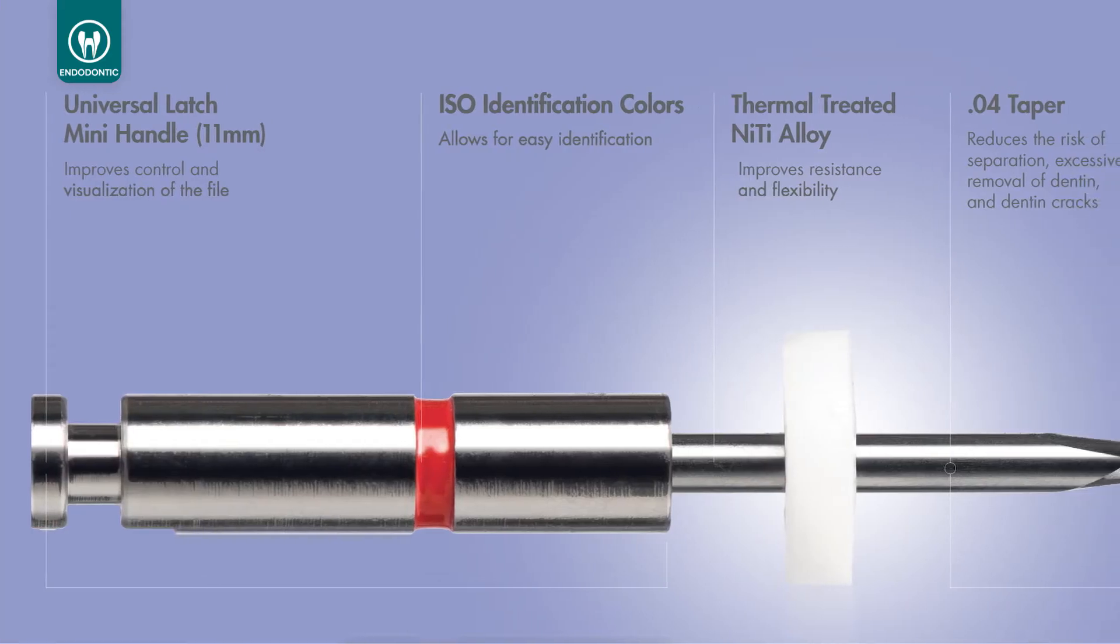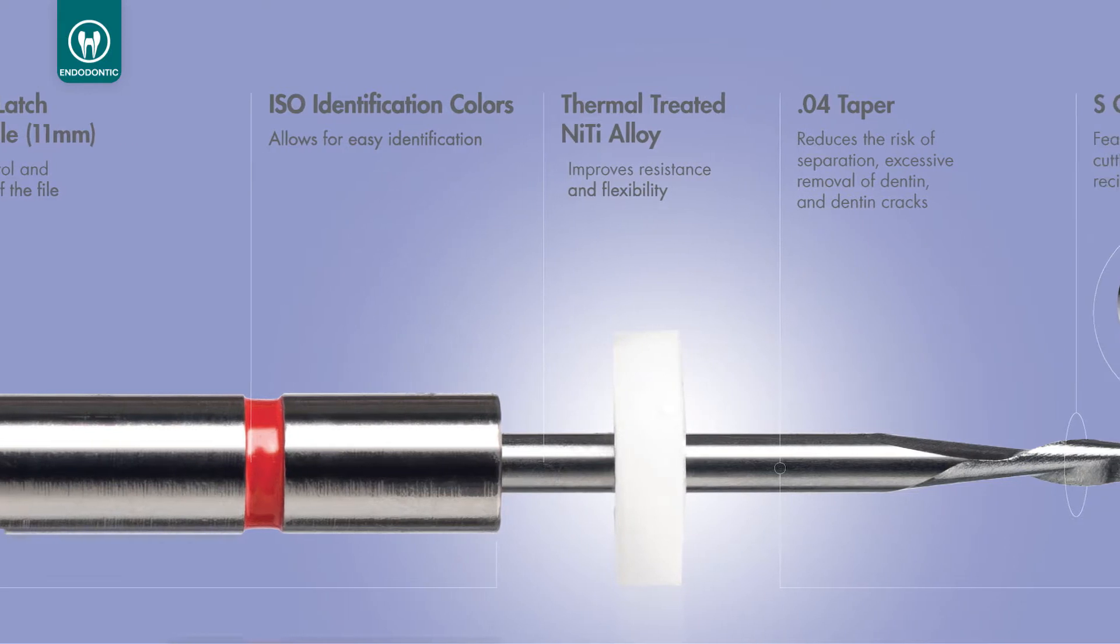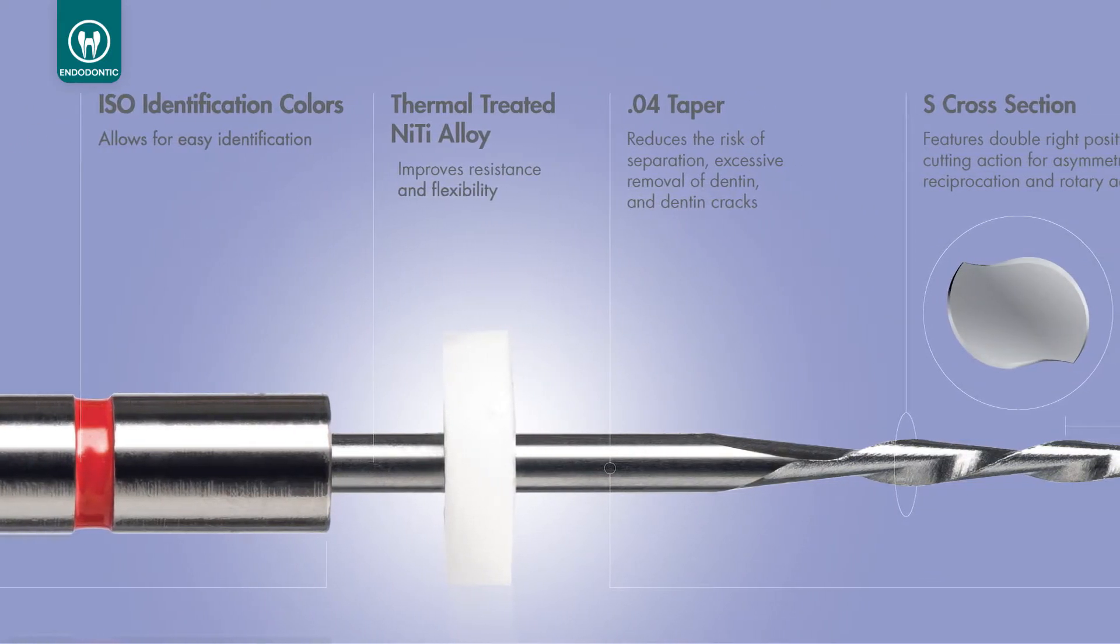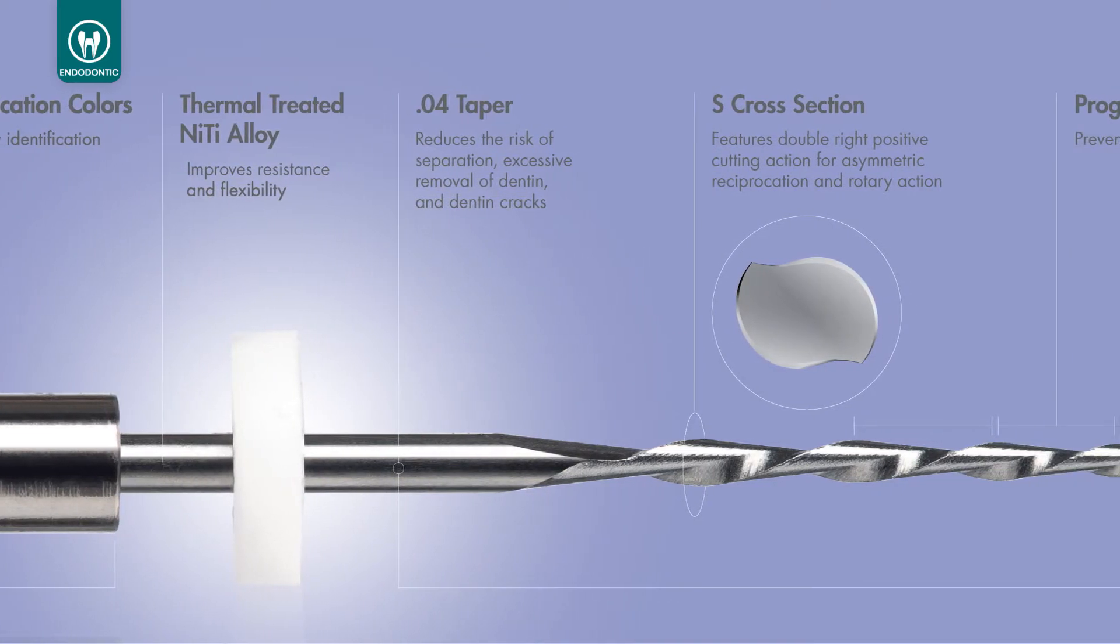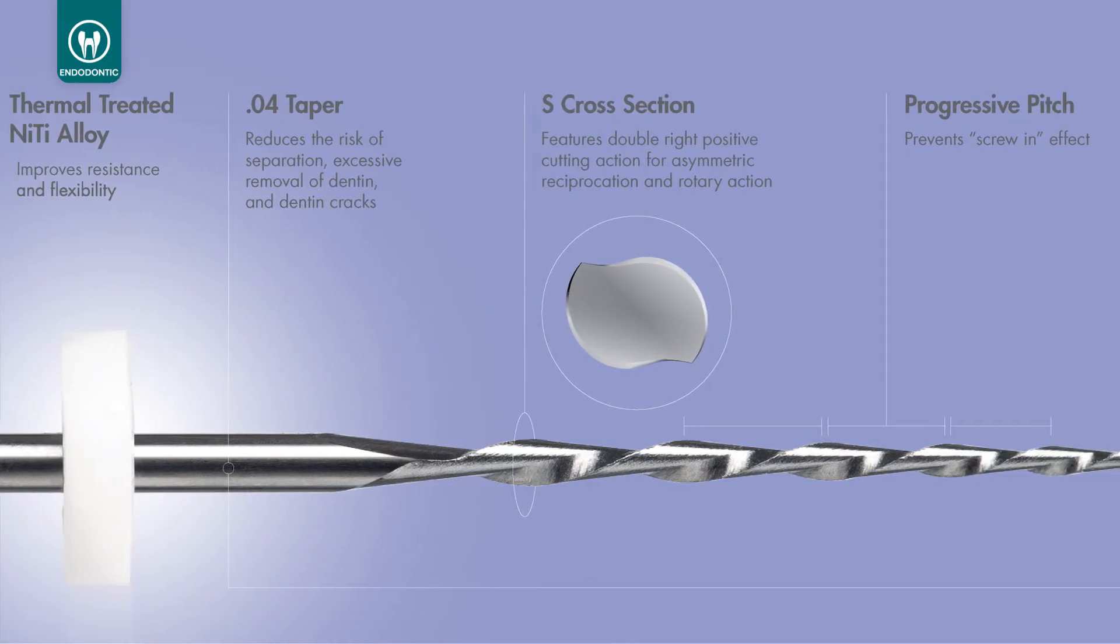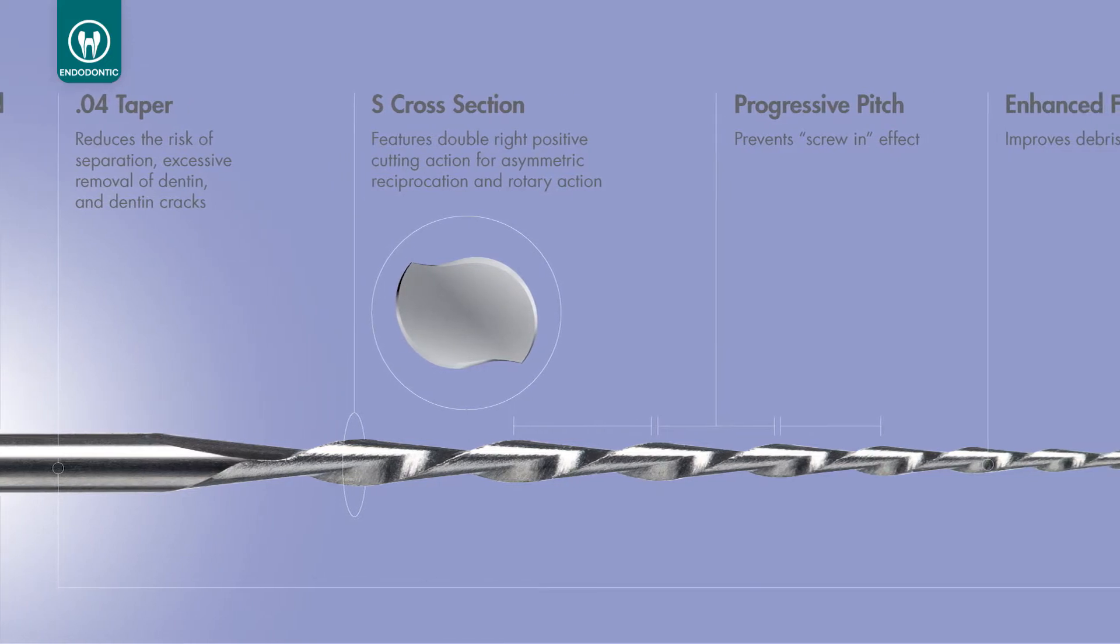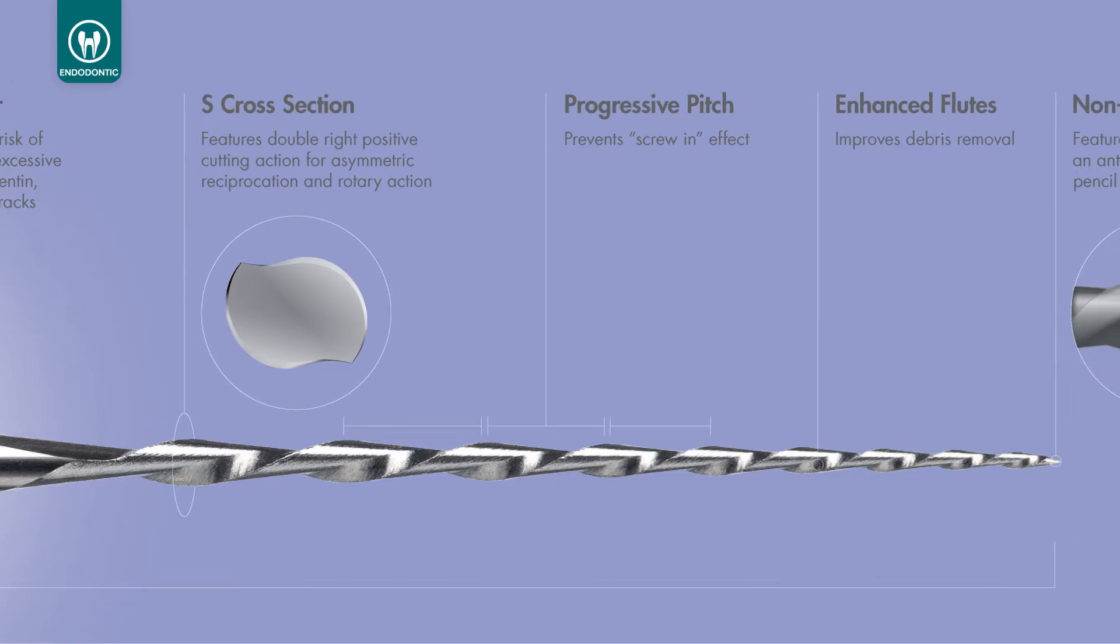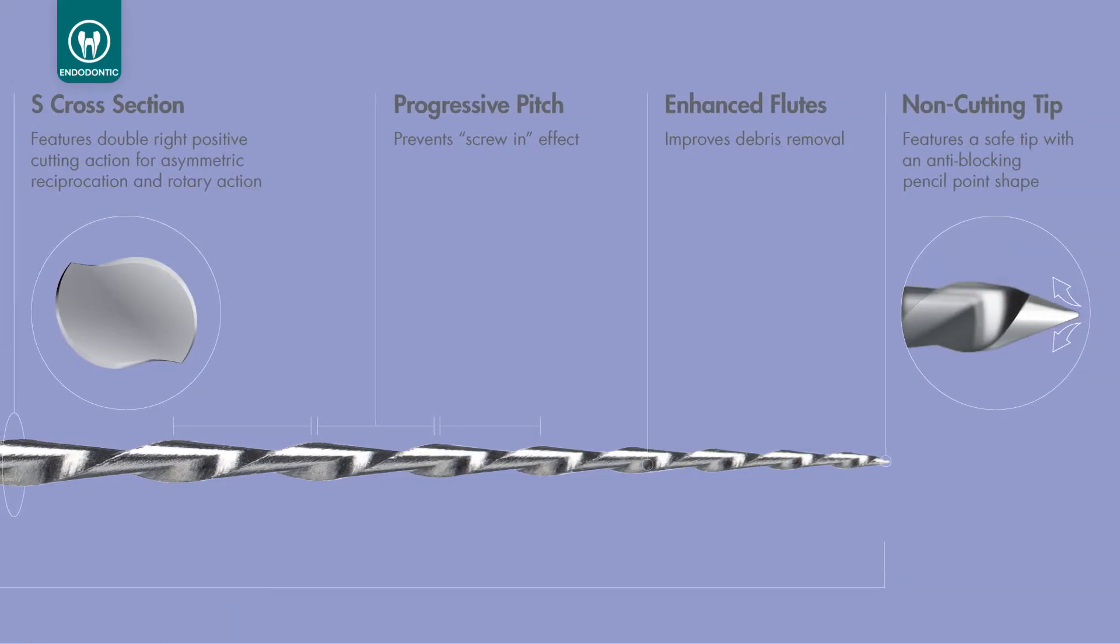The GENIUS files are designed to be used in reciprocation and rotation. The reason that we can use both movements, and this is very unique on these files, is the fact that we have a cross-section called the S-cross-section. It means that you have two cutting blades, and these two cutting blades have a positive cutting angle. In a positive cutting angle, you can cut in reciprocation and you can cut in rotation as well.